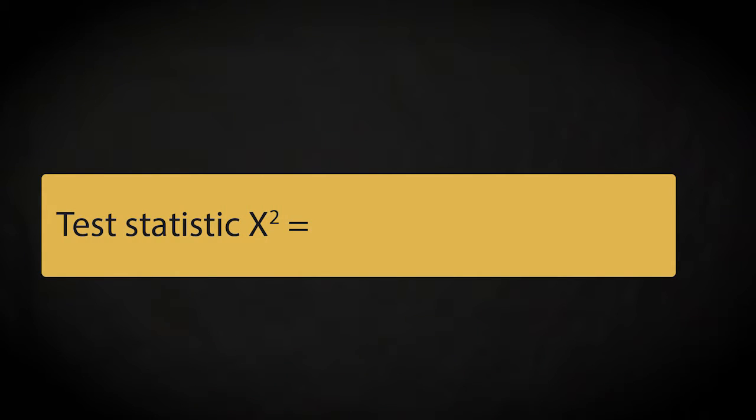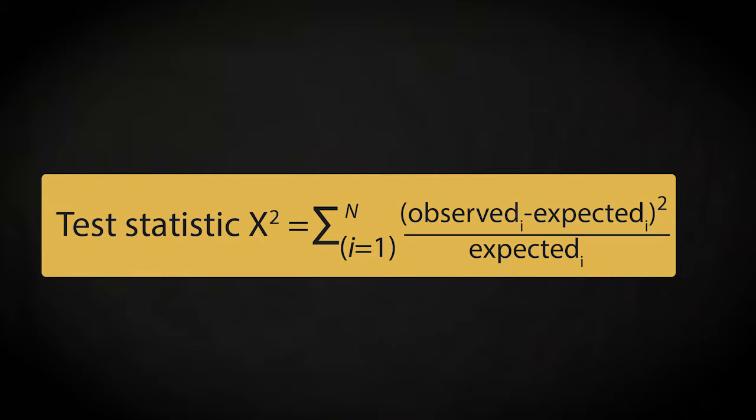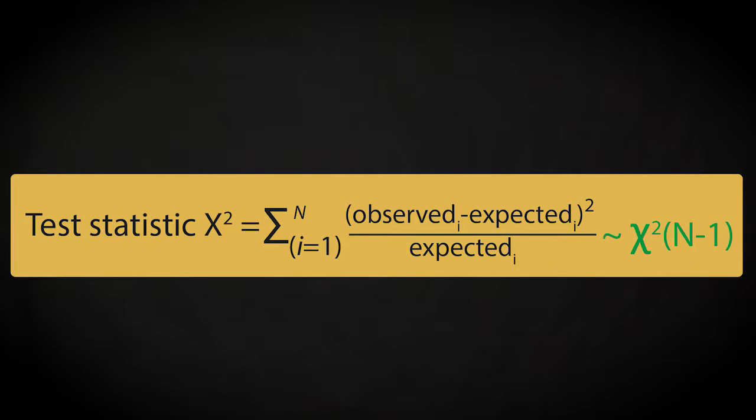The test statistic is given by this formula, which calculates per category i the difference between observed and expected frequencies, squares the result, divides by the expected frequency, and then calculates the sum over all categories n. This test statistic follows a chi-squared distribution with n minus 1 degrees of freedom.